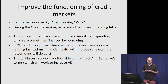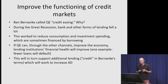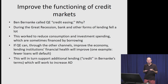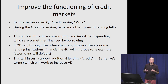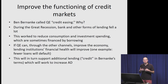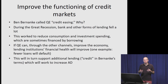Another intent of the QE programs was to improve the functioning of credit markets — what Ben Bernanke called credit easing. During the Great Recession, banks and other lending institutions dramatically reduced their lending volume. When lending declines, consumption and investment decline along with it, since they are often financed by borrowing. If quantitative easing can improve the economy through various channels, this increases the overall health of financial institutions, leading to fewer loan defaults, encouraging banks to increase lending, which in turn supports aggregate demand through increased consumption and investment.